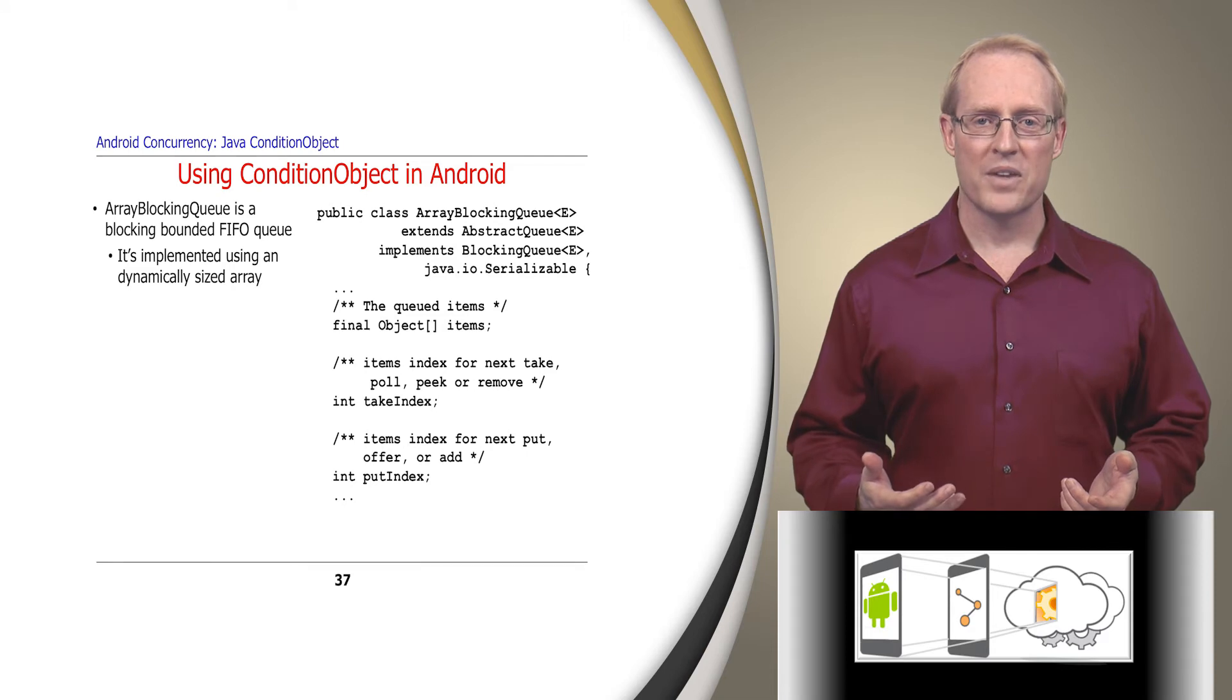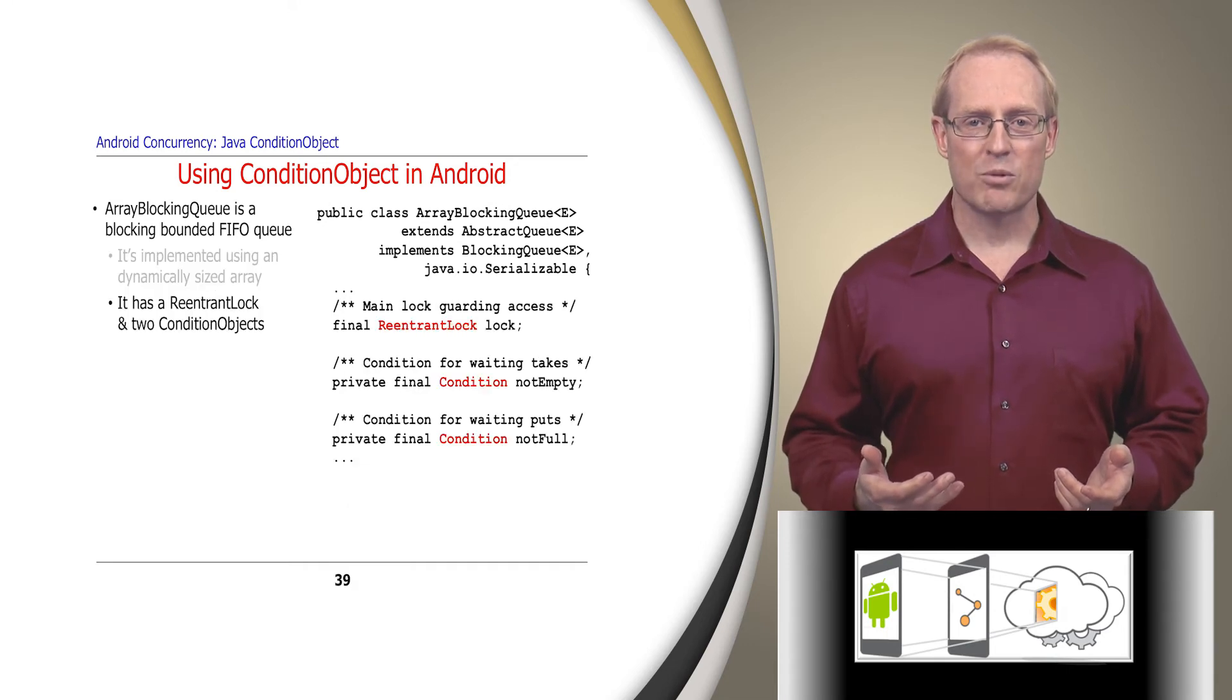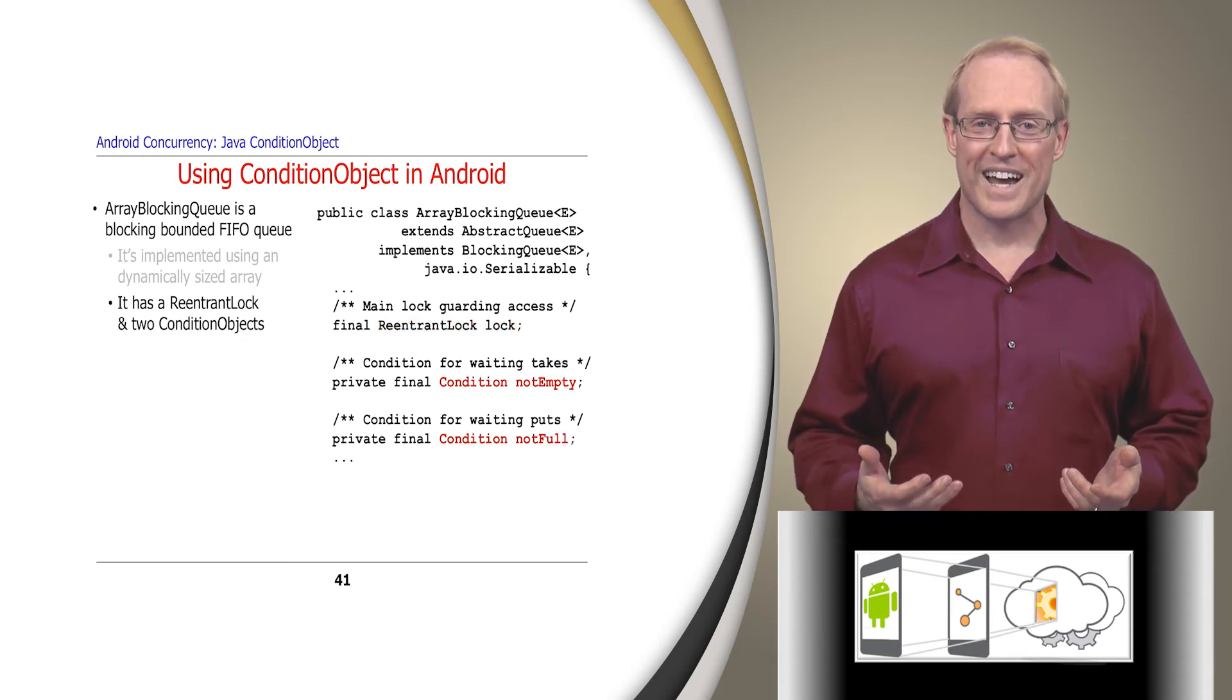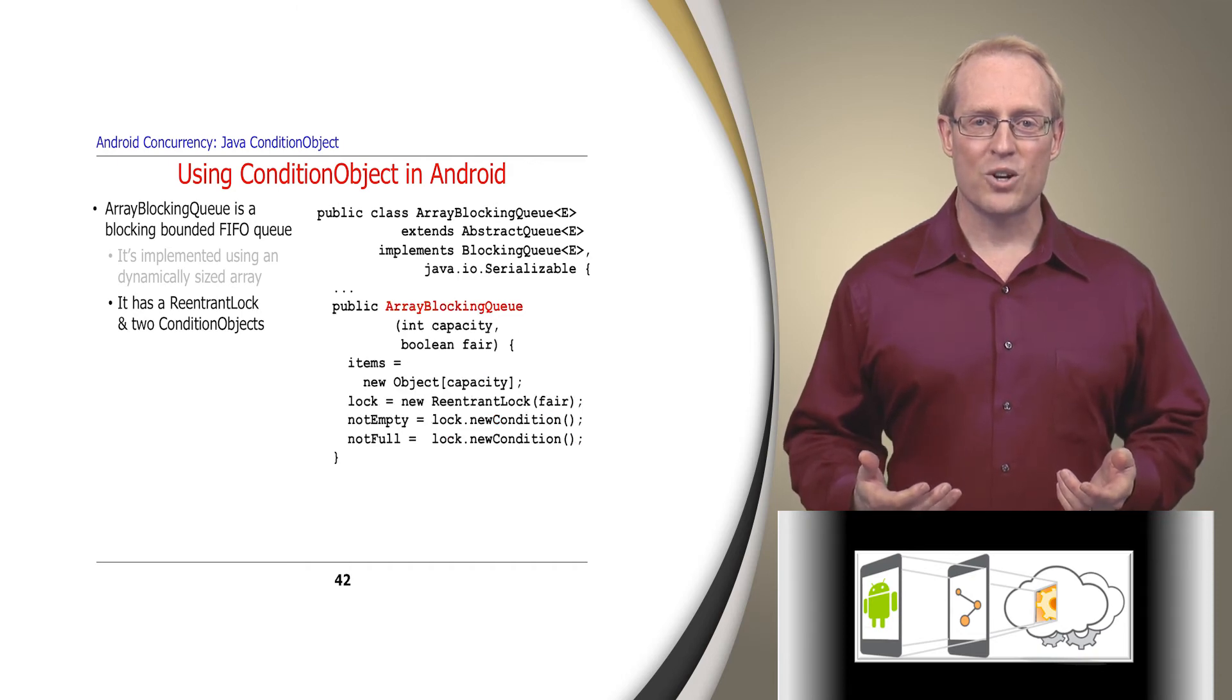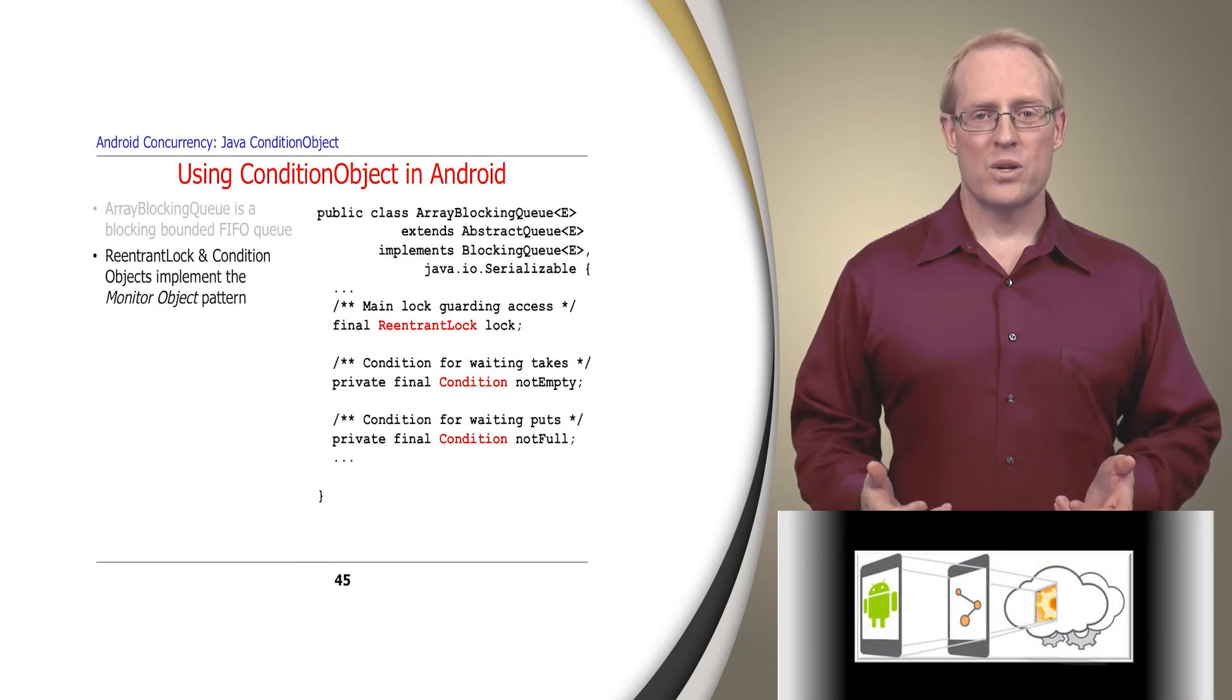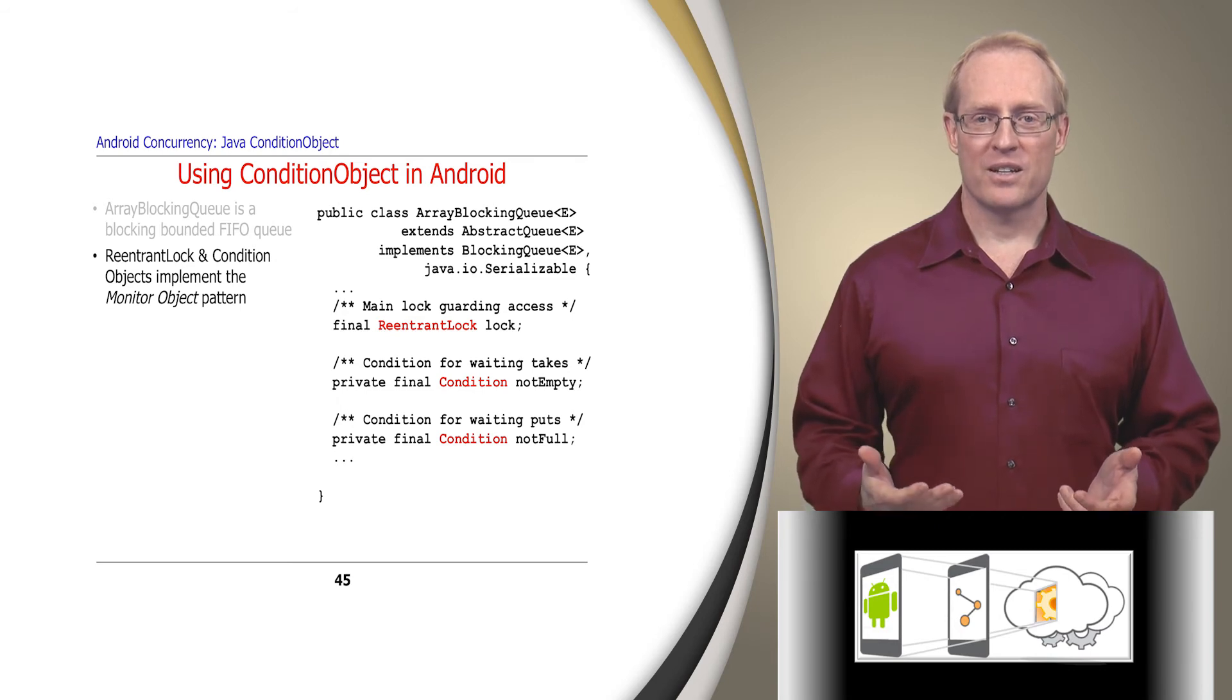This discussion extends our earlier video showing how array-blocking-queue applies reentrant locks. Array-blocking-queue is implemented as a dynamically-sized array. Some relevant data members include the array of queued items and the indices used to keep track of where the next put or take method occurs in the items array. Just as Java's reentrant lock class can replace the use of Java's built-in synchronized methods and blocks, a condition object can replace the use of built-in Java monitor object methods. For example, array-blocking-queue's implementation has a reentrant lock to serialize access to its state, as well as two condition objects: not empty and not full, that allow its take and put methods to block when the queue is empty and full, respectively. The array-blocking-queue constructor initializes these data members using the reentrant lock's new condition method to associate the not empty and not full condition objects with the lock.